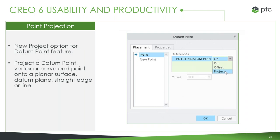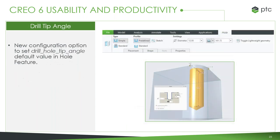Point projection is also new to 6.0. We can take something like a vertex, datum point, or endpoint and then project it onto something like a planar surface, datum plane, or simply a straight line — very useful for defining references and how they line up exactly with your part. Also new: Drill Tip Angle. In the hole options, there's generally a preset value for the tip angle at 118 degrees, but some customers don't use this default. We've given the user the option to define this value to wherever they happen to need.